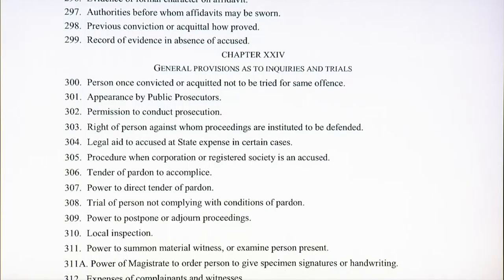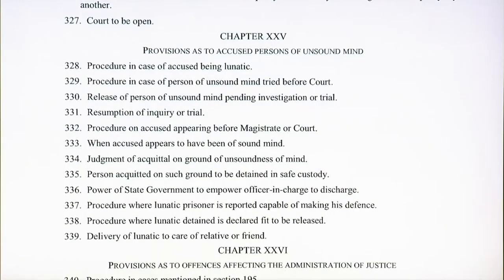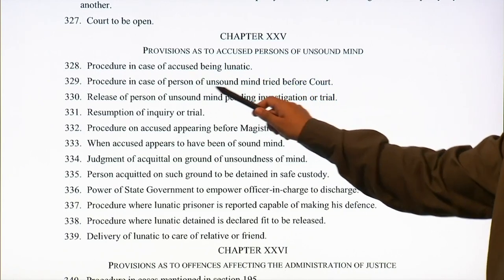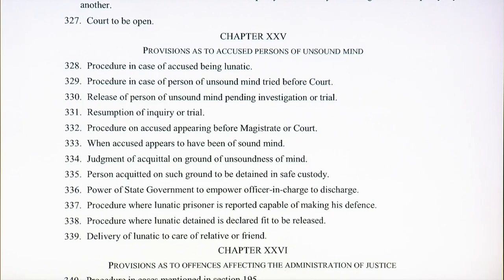Chapter 24 deals with general provisions as to enquiries and trials. Chapter 25 deals with provisions as to accused persons of unsound mind — if the accused person is of an unsound mind, what is the procedure? It covers procedure in case of accused being a lunatic, procedure in case of a person of unsound mind tried before court, release of person of unsound mind pending investigation or trial, and resumption of enquiry or trial.